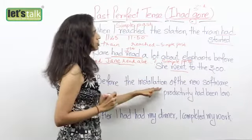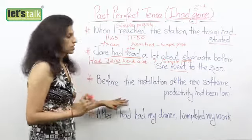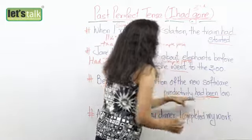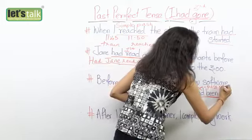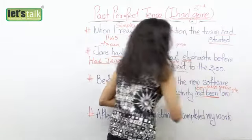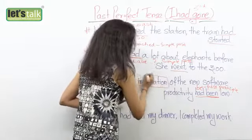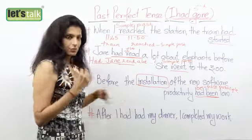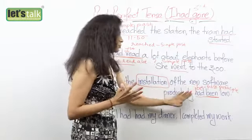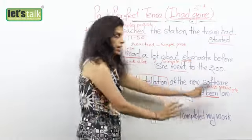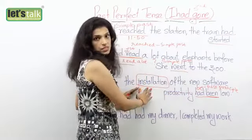In the next sentence: 'Before the installation of the new software, productivity had been low.' Now if you realize, there is no simple past verb used — it's only a past perfect tense. For all those who get confused about what 'been' is, it is nothing but the third form of 'be' — it's the past participle. So first the productivity had been low, and the recent thing that happened was the installation. We have not used a simple past tense to denote the action that happened later on, but this is what happened — a recent event, the installation. So before the installation of the new software, productivity had been low. First the productivity had been low and then there was an installation that took place. Here we are denoting this happened first, and then there was an installation.